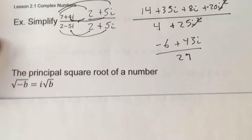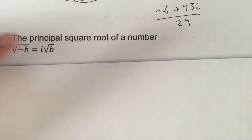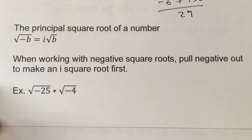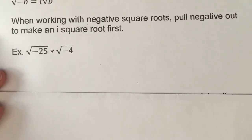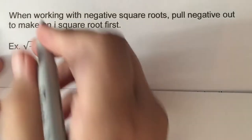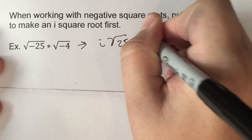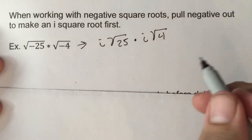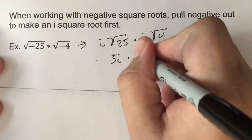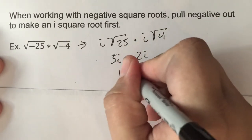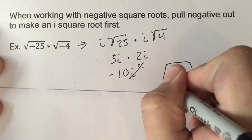As far as square roots go, keep in mind that if we have the square root of a negative, we can rewrite it as i times the square root of the positive. So when working with negative square roots, pull the negative out to make it i first. For example, square root of negative 25 times square root of negative 4 becomes i times square root of 25 times i times square root of 4, which is 5i times 2i, giving 10i squared, which equals negative 10.